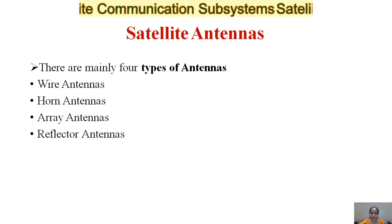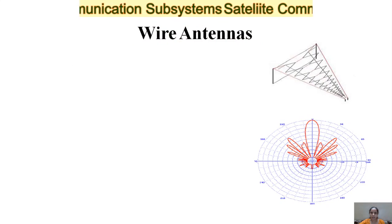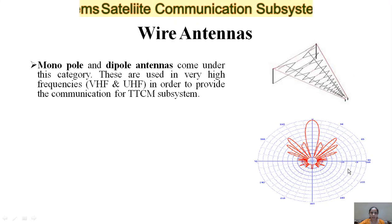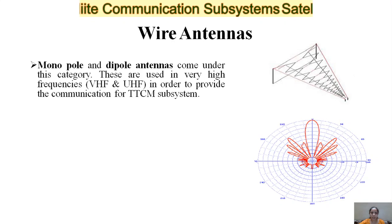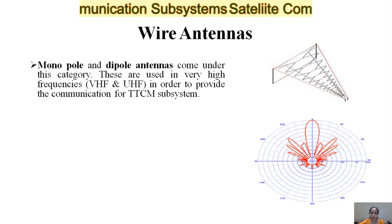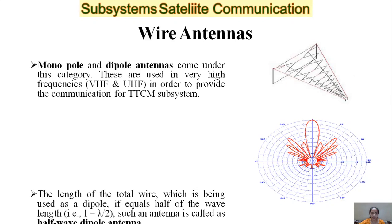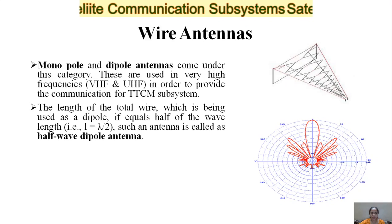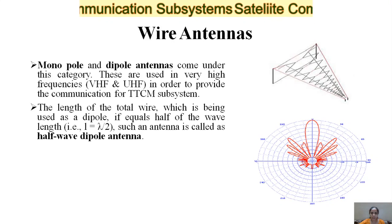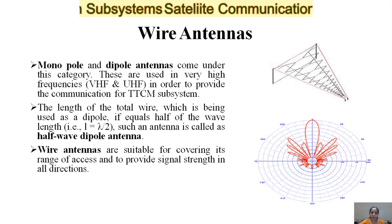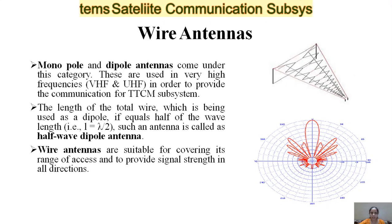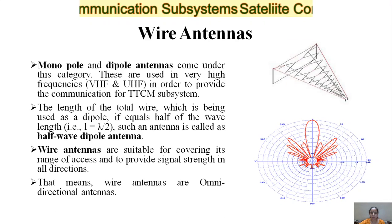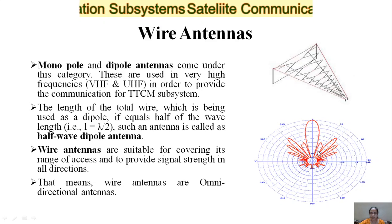Wire antennas include monopole and dipole antennas. These are used at very high frequencies in the VHF and UHF range to provide communication for the TTCM subsystem. If the total length of wire used as a dipole equals half the wavelength — that is, L = λ/2 — such an antenna is called a half-wave dipole antenna. Wire antennas are suitable for covering a wide range and providing signal strength in all directions, so they are also called omnidirectional antennas.